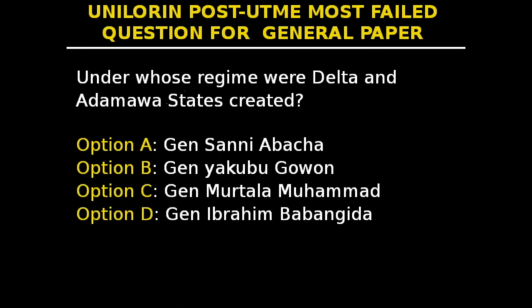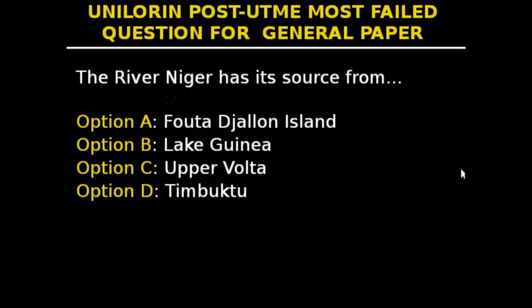This is question 27. Under whose regime were Delta and Adamawa states created? The options are: Sani Abacha, Yakubu Gowon, Murtala Mohammed, and Ibrahim Babangida. Under the regime of General Ibrahim Babangida, 13 states were formed: Abia, Adamawa, Akwa Ibom, Delta, Edo, Enugu, Jigawa, Katsina, Kebbi, Kogi, Osun, Taraba, and Yobe. The answer is option D — General Ibrahim Babangida.